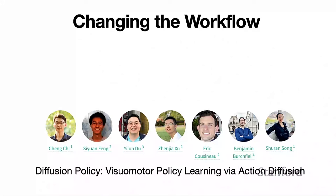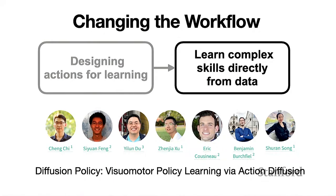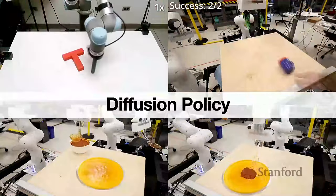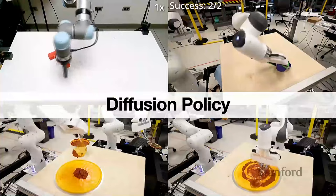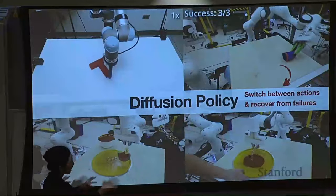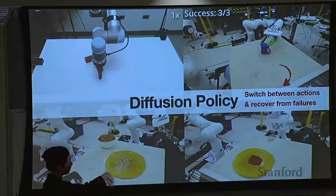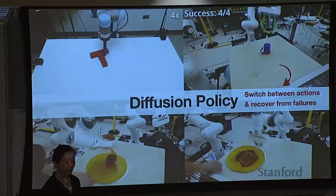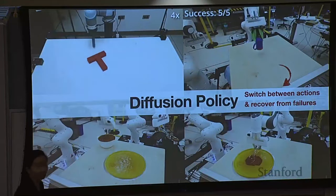Recently, our whole group started changing the workflow a little bit, especially after the work on diffusion policy. What we learned is that instead of always carefully designing the action primitive, we start to see a lot of strong evidence that it's possible for robots to directly learn those complex manipulation skills directly from human demonstration data. Here is diffusion policy trained for a variety of tasks, all using the same network architecture — we don't need to change the network architecture design, just swap out different data. You can do a lot of different tasks. If you pay attention to the mug flipping task, you can see that the robot is able to organically switch between different action primitives like pick-and-place and pushing, and also robustly recover from failures like pick-up failures — all things that are really hard to code up with just action primitives, but the robot is able to learn from human demonstration data.